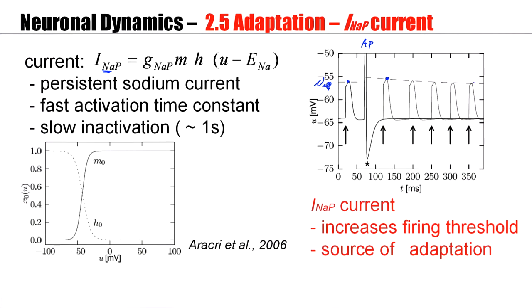Therefore, the persistent sodium current is a source of adaptation, and it works by increasing the firing threshold. It's a persistent current because, once it's activated, it has a very, very slow inactivation time constant. Therefore, for the second spike, many sodium channels are still in the inactivated state, and they cannot participate in the generation of the next action potential.